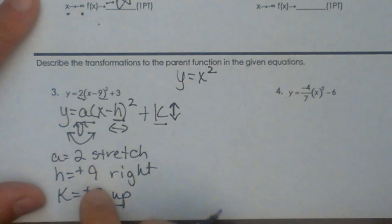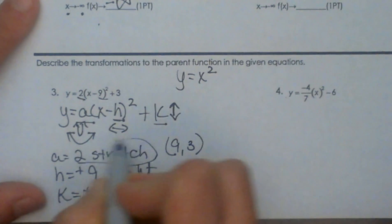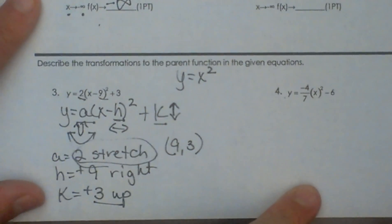So in other words, my vertex is going to be at 9, 3, and it's going to be stretched nice and skinny. So I can get a lot of information from here.